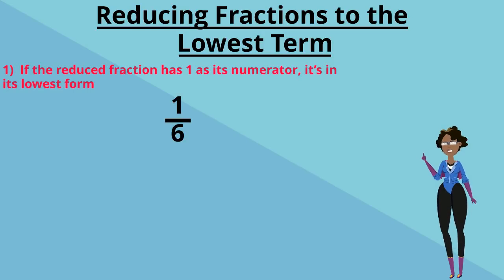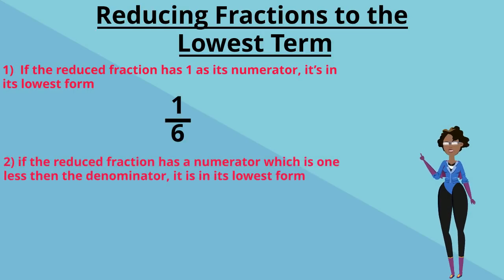And the second tip. If the reduced fraction has a numerator which is one figure less than its denominator, it's already in its lowest form. For example, two-thirds, which is what we just looked at.